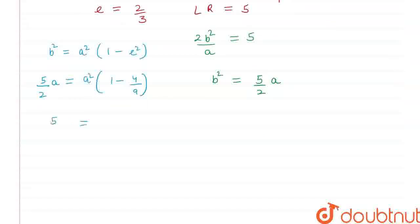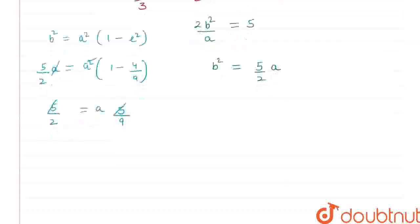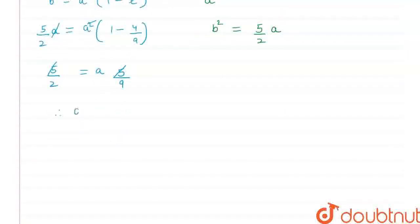Therefore 5 by 5 will cancel out each other. Therefore I will get my a is equal to 9 by 2. I got the value of my a.